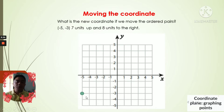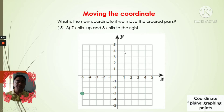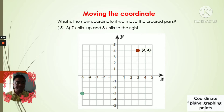For number one, we have the coordinate negative five negative three. We're going to move it seven units up — counting one, two, three, four, five, six, seven — then eight units to the right — one, two, three, four, five, six, seven, eight. So the new location of our coordinate negative five negative three is now three four. That's the new position after we move.